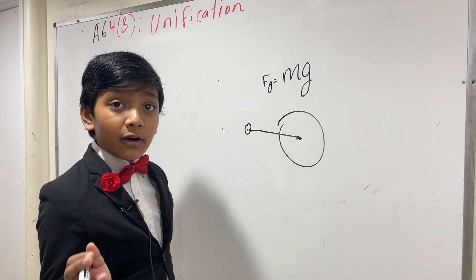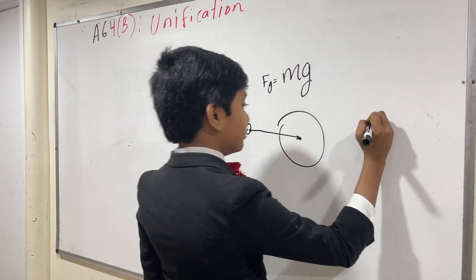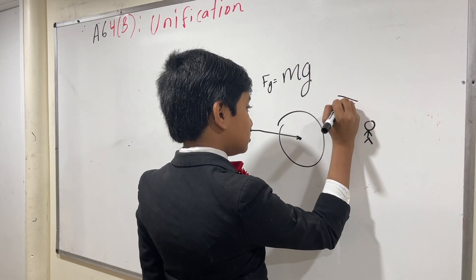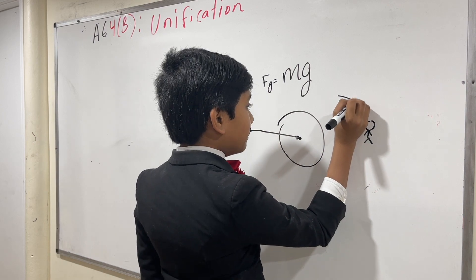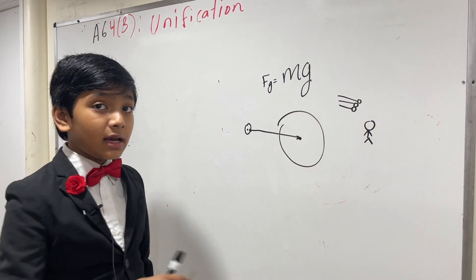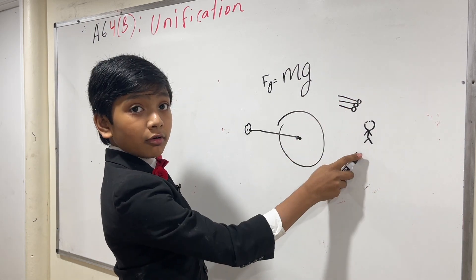And this unified the laws of the Earth and the laws of the heavens. Because people used to look at the night sky and think, how do these elegant bodies of the heavens work? They did not understand the physics of what was going on up there, only what was going on down here.